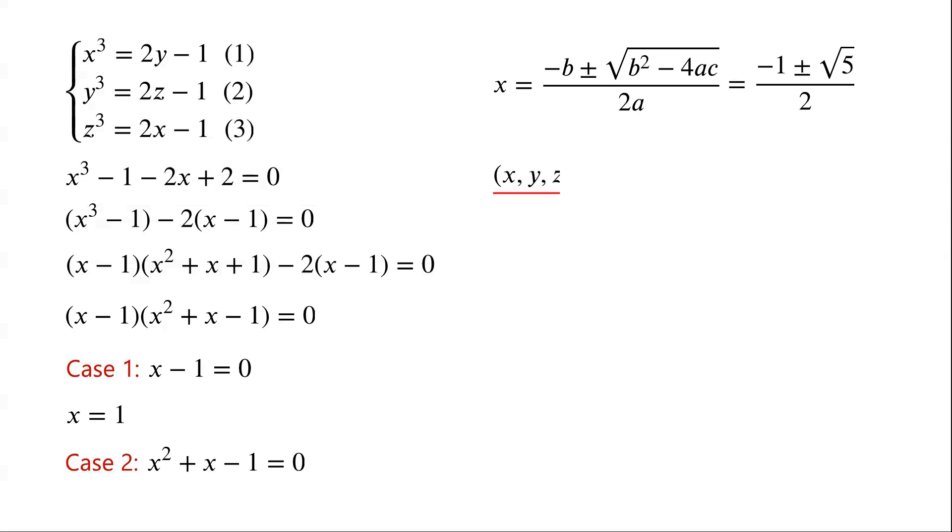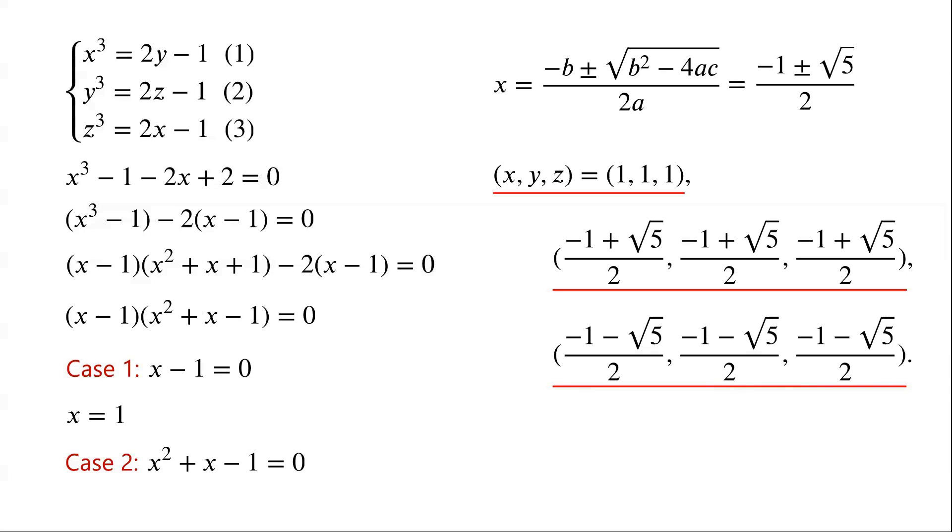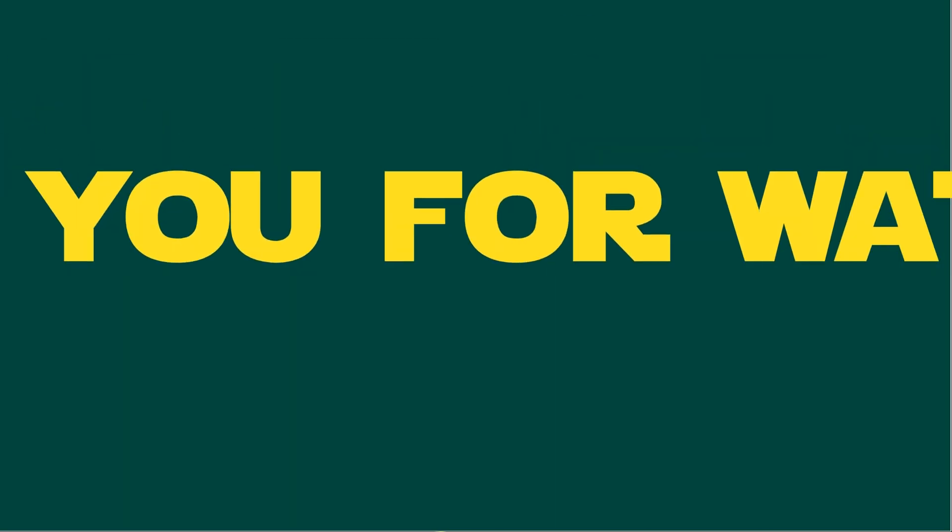So (x, y, z) = (1, 1, 1) or ((-1 + √5)/2, (-1 + √5)/2, (-1 + √5)/2) or ((-1 - √5)/2, (-1 - √5)/2, (-1 - √5)/2). It is not difficult to verify that they are solutions of the system of equations.